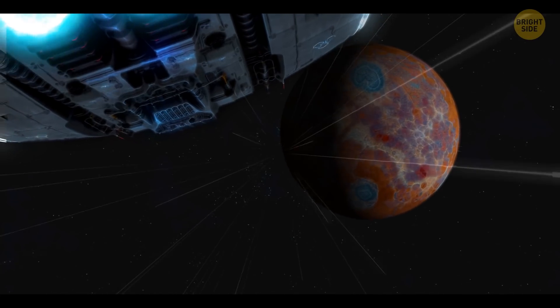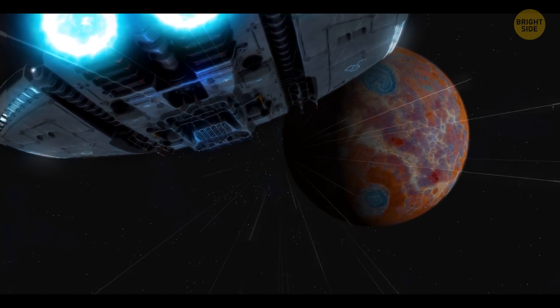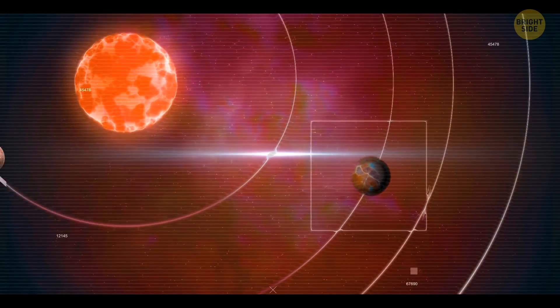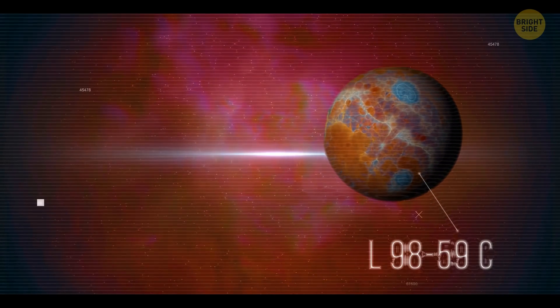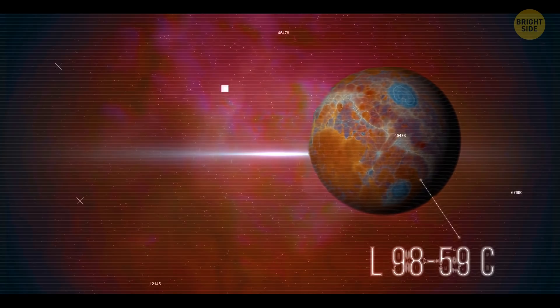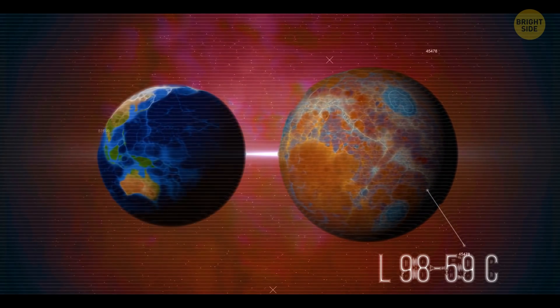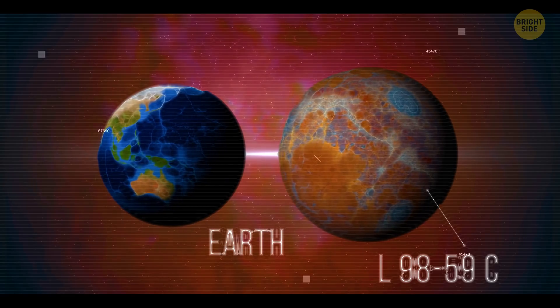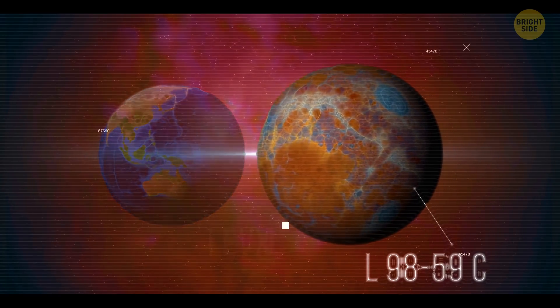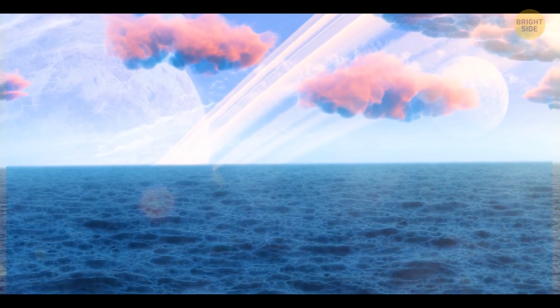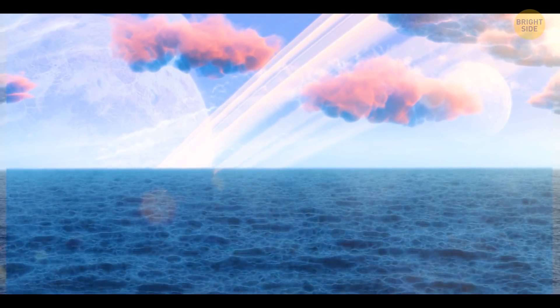The next planet is 2.8 million miles from its host star. That's 13 times closer than the distance from Mercury to the sun. And it makes a complete revolution around the star in 3.7 days. But what's interesting is that the planet is 30% bigger than the Earth, and twice as heavy. So it belongs to the class of super-Earth planets. Such planets can be rich in water, ice, methane, and hydrogen.